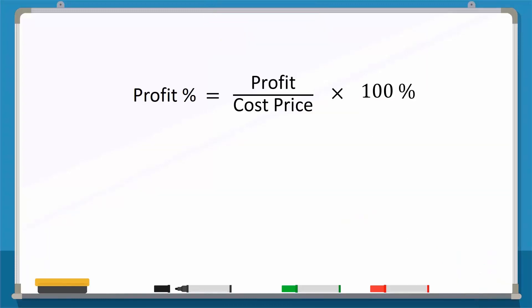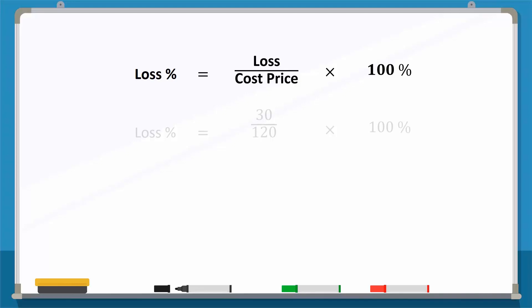It's very similar to the profit percent. Loss percent is equal to the loss divided by the cost price times 100%. 30 over 120, multiplying it with 100%, forms the expression for loss percent.